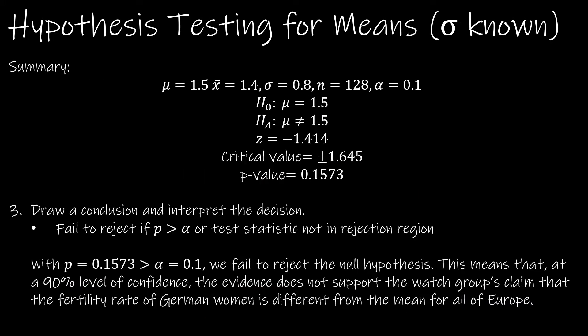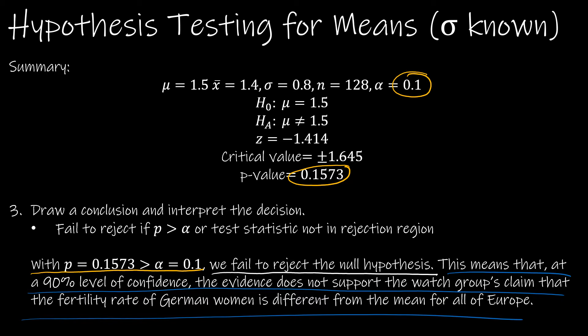I don't want you to get too stressed out about the math here, because if you understand the basic concept, we can set up Excel to do all of that work for us. And now our conclusion. Either from the rejection region, and if you remember from the last slide, those z-scores were not in the rejection region, which means fail to reject, or the p-value in this case, p is greater than 0.1, and therefore we fail to reject. So the three parts of the conclusion are, here's the data with p greater than alpha. And then what's our conclusion? We fail to reject the null. And then what does it mean? That's important. So this means that at 90% level of confidence or 10% level of significance, whichever you prefer, the evidence does not support the watch group's claim that the fertility rate of German women is different from the mean for all of Europe.